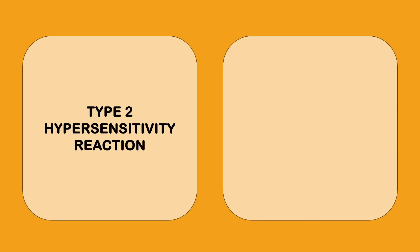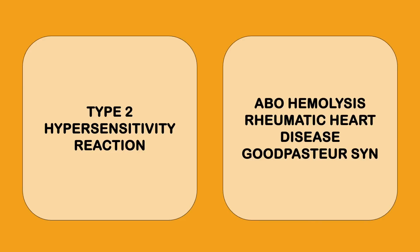Type 2 hypersensitivity reactions are your ABO incompatibility, ABO hemolysis, rheumatic heart disease, Goodpasture syndrome. This is an antigen-antibody reaction.